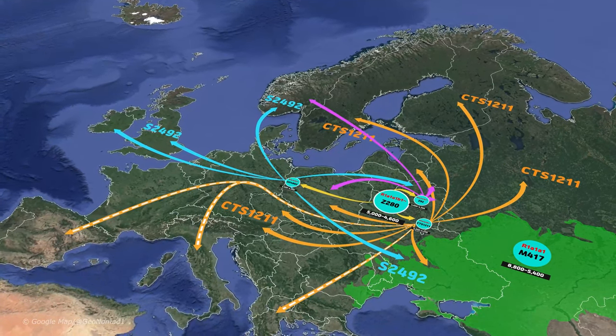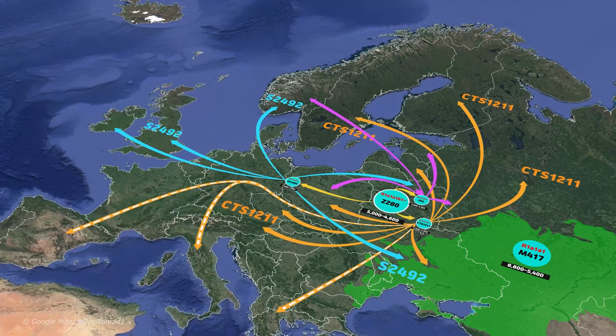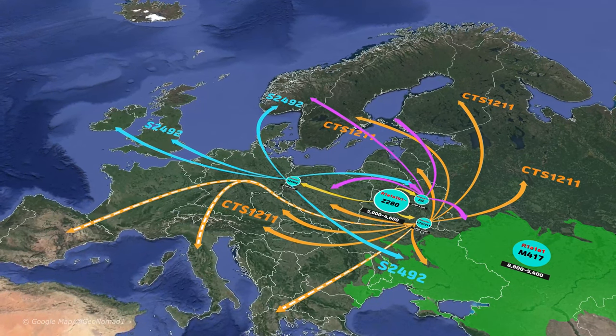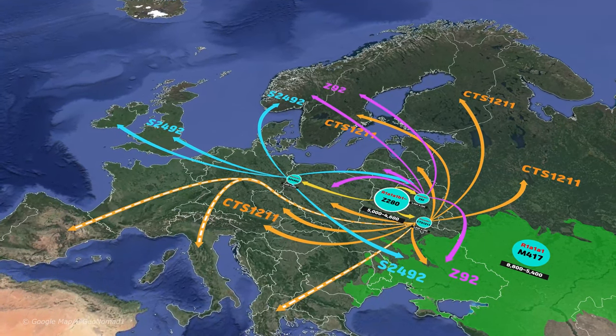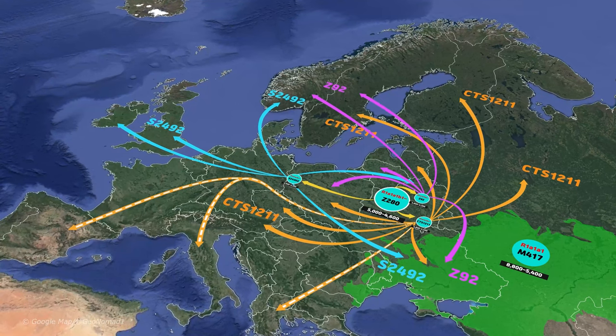Z92 is a paternal line found in Northeastern Europe, Scandinavia, Sweden, Poland, Ukraine, and Lithuania.